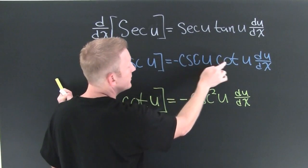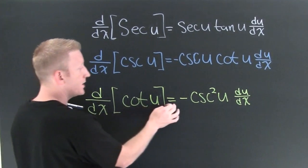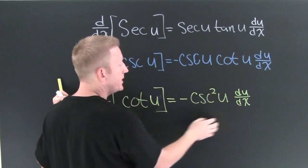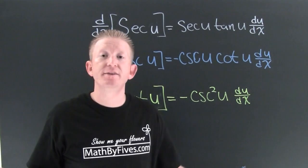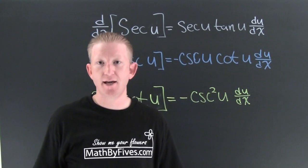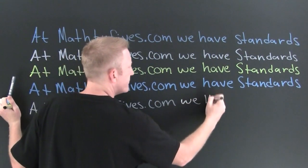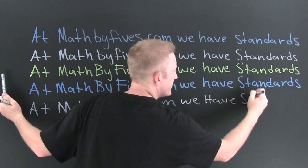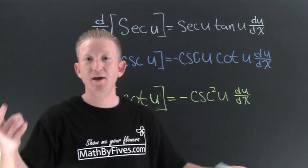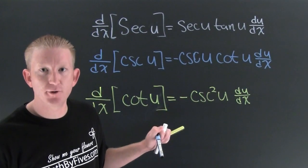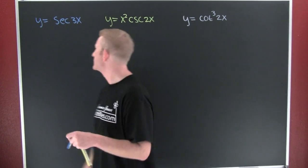The derivative with respect to x of cotangent of u is negative cosecant squared of u times du/dx. When you take the derivatives of all the co-functions, it's going to be negative. Here at Math by Fives we have standards, and you may want to use those standards to remember these. Now that we have those derivative forms, we can go through a couple of examples.